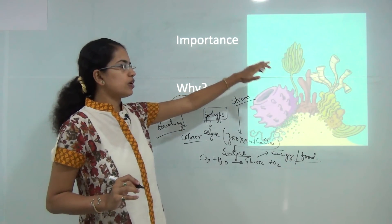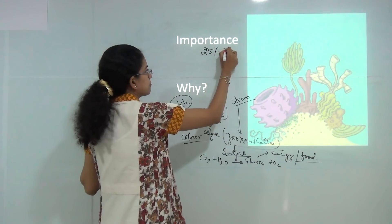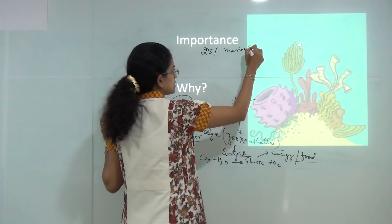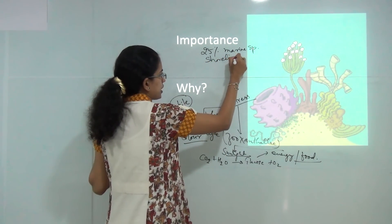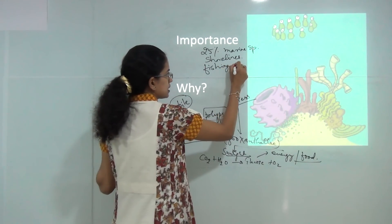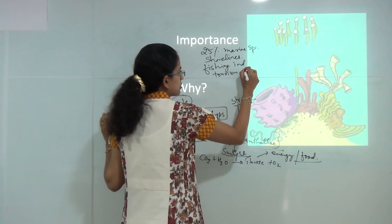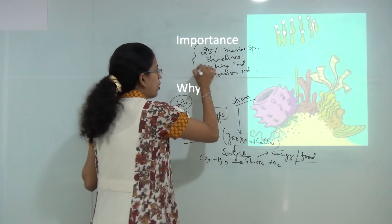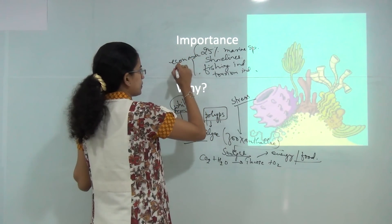Why coral reefs are important for us. Coral reefs contribute to around 25 percent of the marine species that are present, it is an important component of the shoreline, of the fishing industry, for the tourism industry and therefore on coral reefs there are numerous economic activities that are dependent.